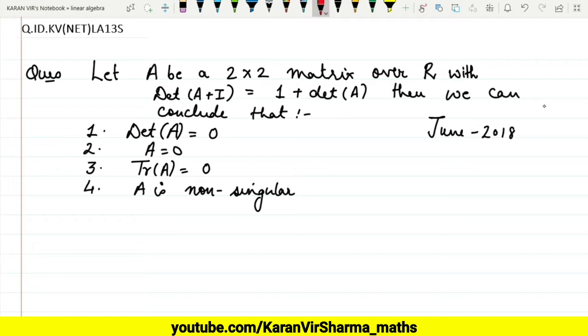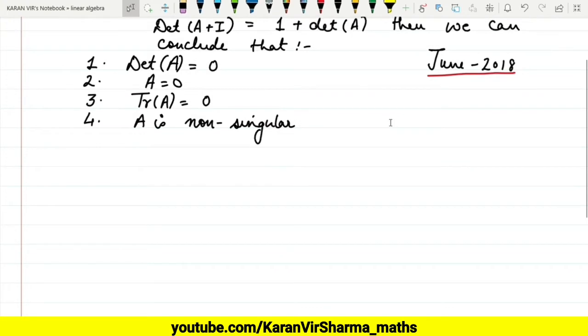We can conclude that: det(A) = 0, A = 0, Tr(A) = 0, or A is non-singular. This is a June 2018 question, single correct. So let's solve this.